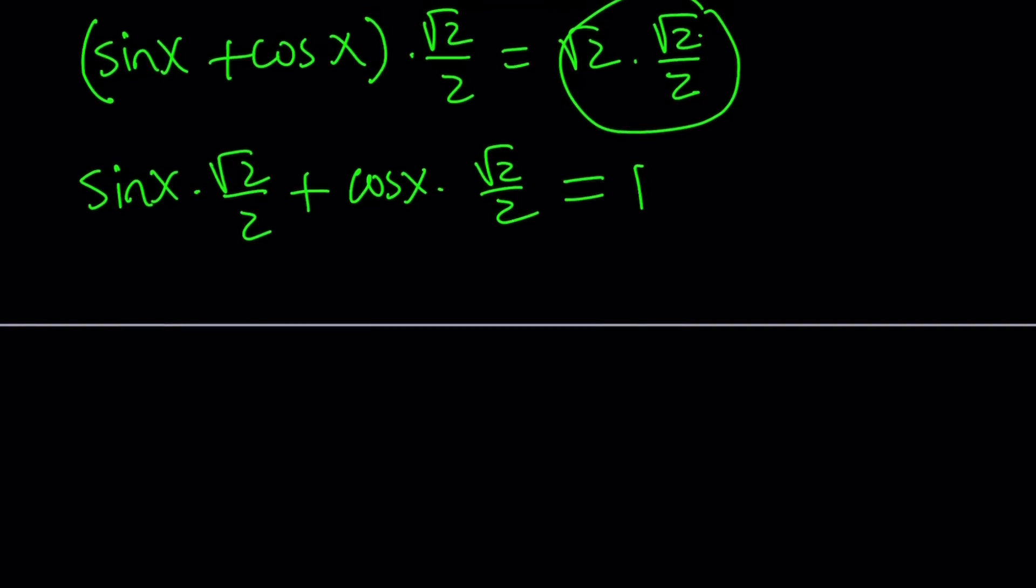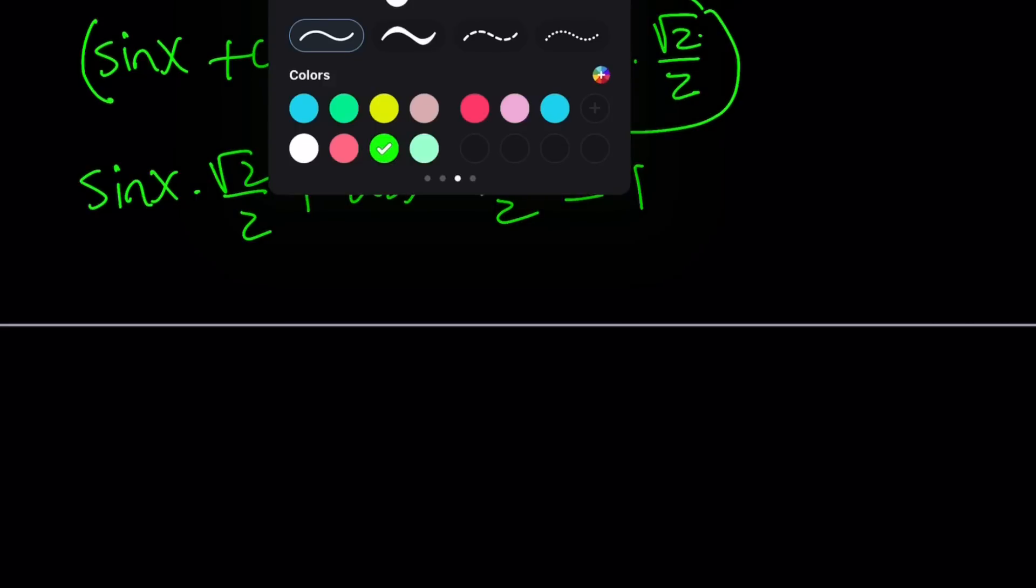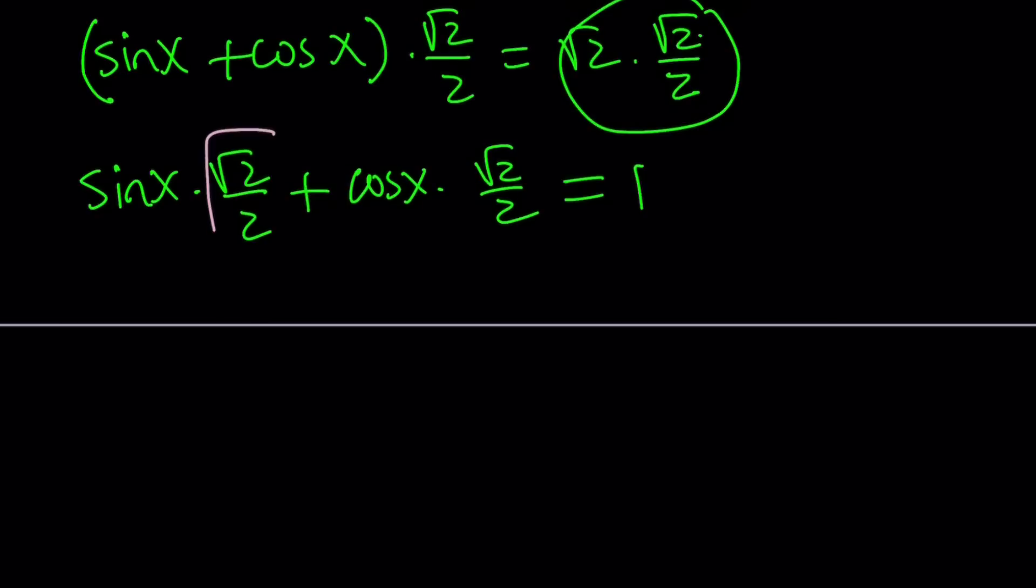Now, the goal is to turn this into sine of a sum or the cosine of a sum. I'm going to go ahead and replace this with cosine of pi over 4 and this with sine pi over 4. All right, let's do it.